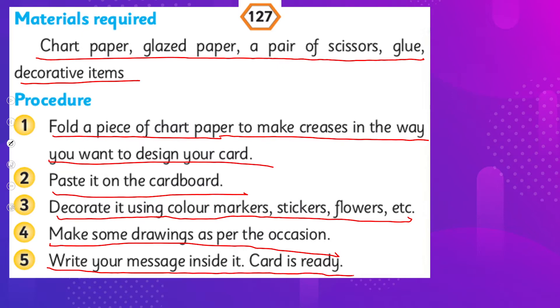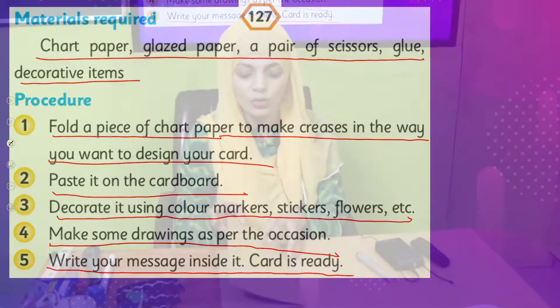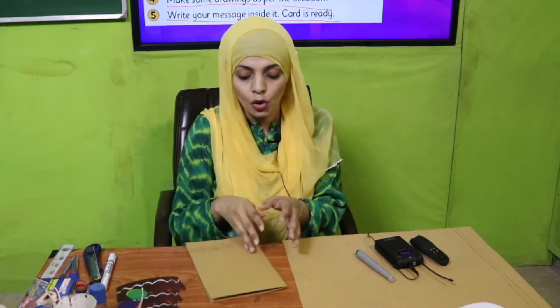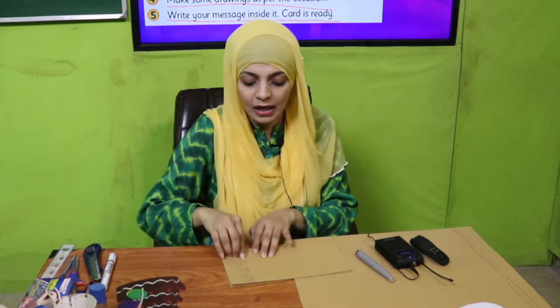There is no hard and fast rule about how to make a card. You need any chart paper, glazed paper, or any colored sheet. I am using a chart paper and I will make a crease and fold it in half. This part is where I have completed the decoration. I drew a line where I will write my message and on top I will do the decoration.